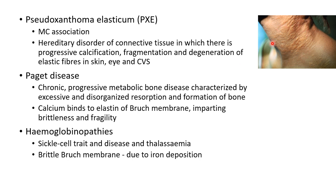This picture shows a patient with pseudoxanthema elasticum showing degenerative changes in the skin. The second association is Paget's disease. It is a chronic progressive metabolic bone disease characterized by excessive and disorganized resorption and formation of bone. The calcium binds to elastin of Bruch's membrane imparting brittleness and fragility. Other associations are hemoglobinopathies including sickle cell trait, sickle cell disease, and thalassemia. In these cases there is a brittle Bruch's membrane due to iron deposition.